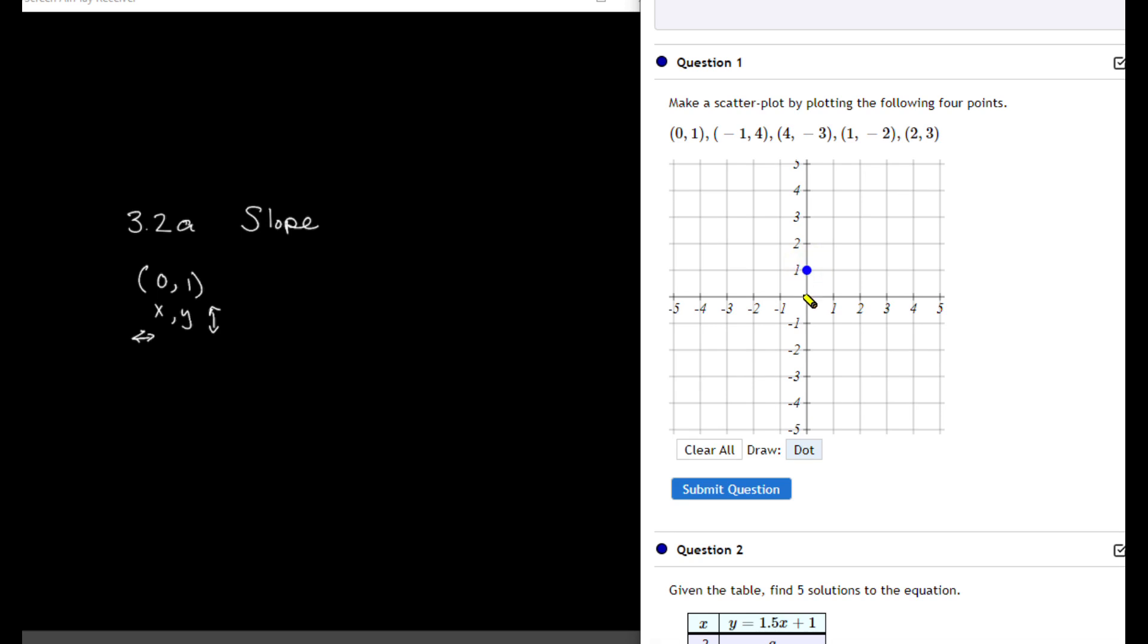My next point is negative 1, 4, so that means I go over to negative 1 and up 4. The third point is 4, negative 3, so I go to the right 4 and then down 3. Positive values for y mean you go up. Negative values for y mean you go down.